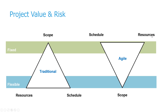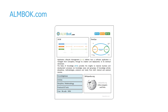In an agile world the iron triangle is turned upside down. Schedule and resources are the fixed elements — we work in short iterations of typically two to three weeks, with the schedule and resources already set. The only thing that changes is the scope included in each iteration. So it's kind of the inverse of traditional project management, regardless of which type of project or organization you're running.